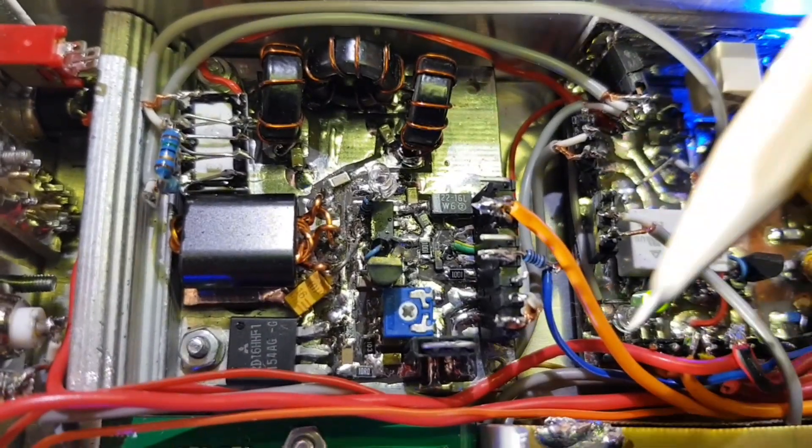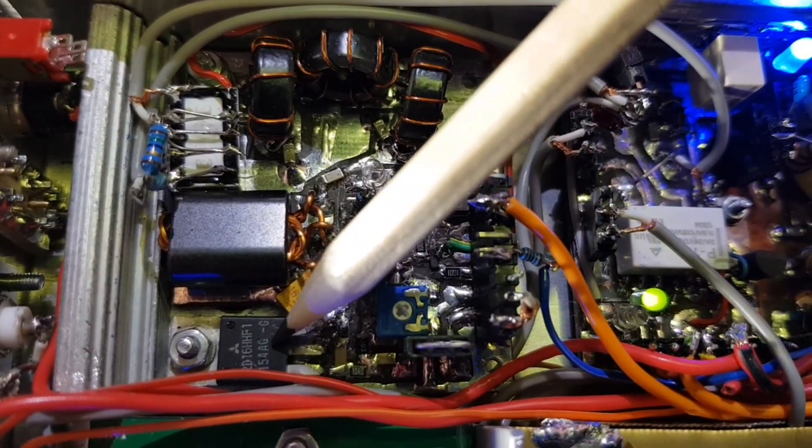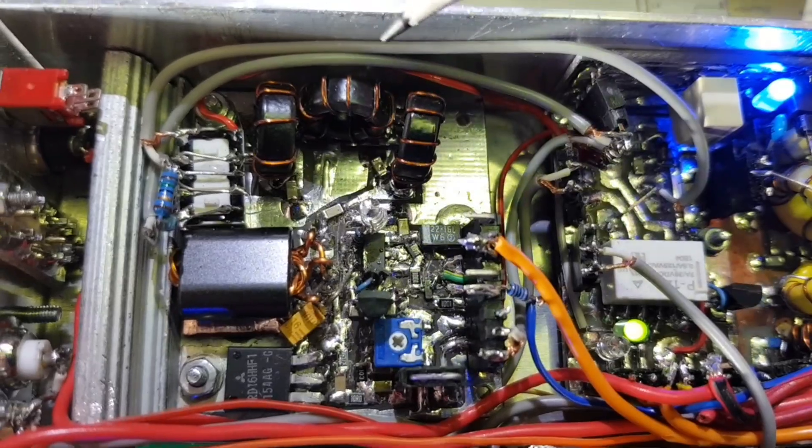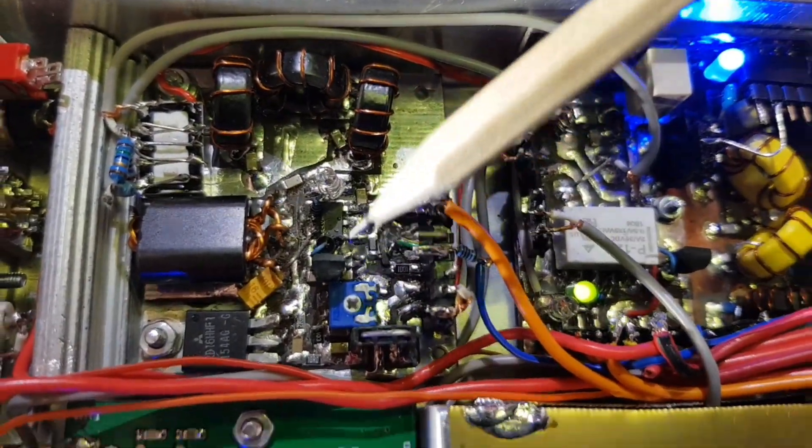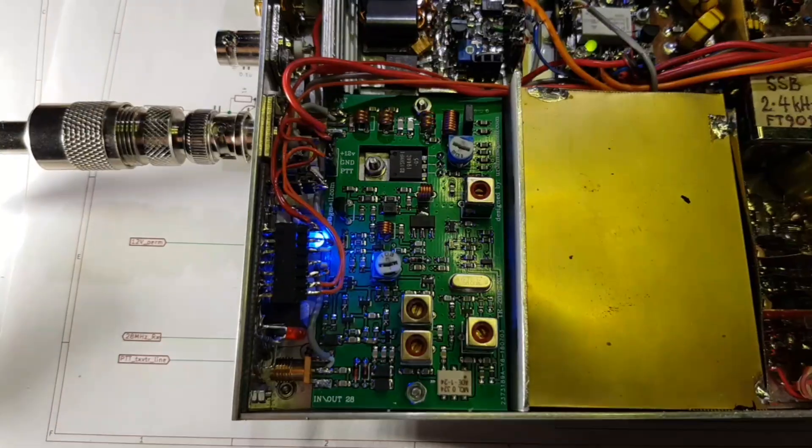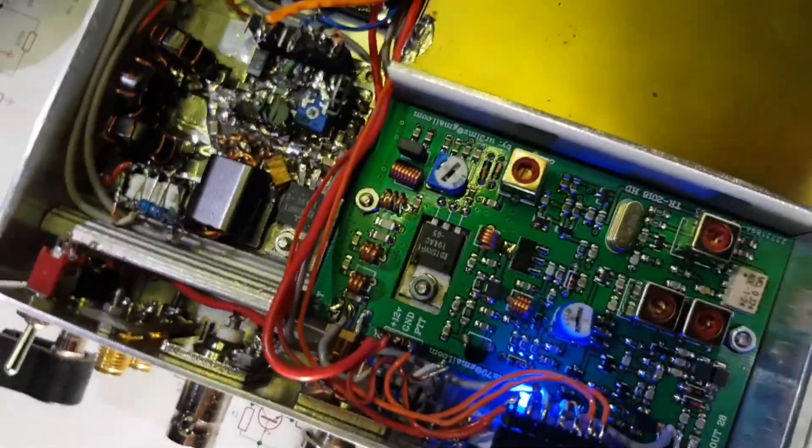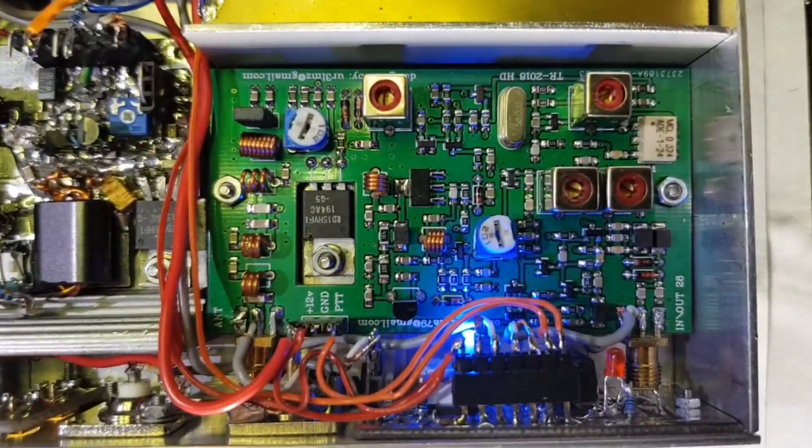This is the 28MHz PA, that's the output FET there. Output transformer, low pass filter and bias control. And in this back corner here, the UR3 LMZ transverter.